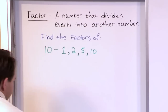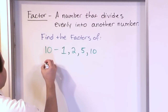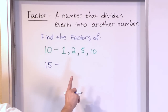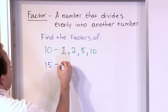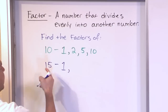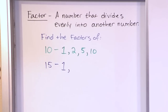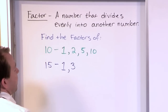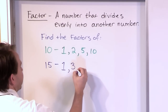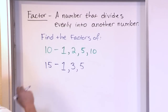Let's do another example — the number 15. Can 1 be divided into 15? Yes, in fact 1 can be divided into any number, so 1 is always a factor. Can 2 be divided into 15? No, because 2 times nothing gives me 15. Can 3 be divided into 15? Yes, because 3 times 5 is 15. Can 4 be divided into 15? No — 15 divided by 4 doesn't give a whole number. Can 5 be divided into 15? Yes, because 5 times 3 is 15.